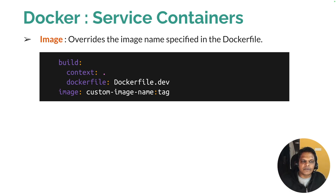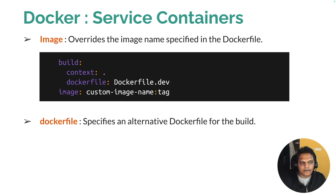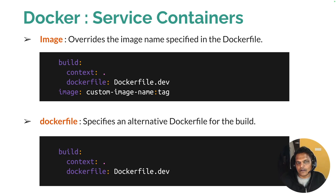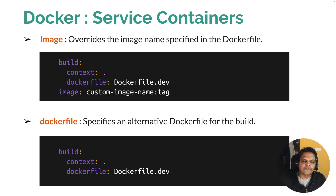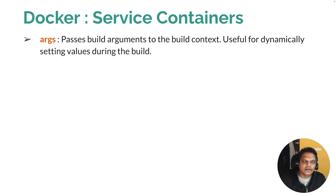Once you process this Docker Compose file it will create a Docker image with the defined name and defined tag. We also have the dockerfile parameter, which specifies an alternative Dockerfile for the build. It is possible that within the current directory you have only one Dockerfile, but you may also have multiple Dockerfiles. If you have multiple Dockerfiles, when building the image you need to define the specific Dockerfile name within the dockerfile context.